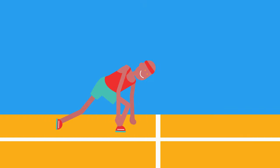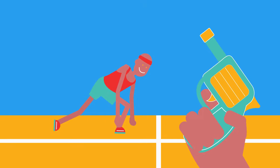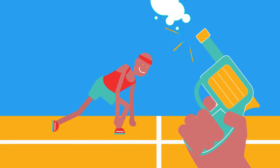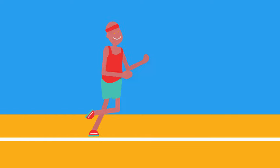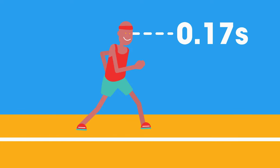How do we know that an athlete has had a false start? For a fair start, the runner mustn't begin to move until they have heard and then responded to the starting pistol. In a human, this response time is about 0.17 seconds.